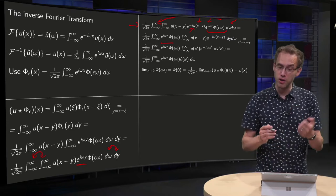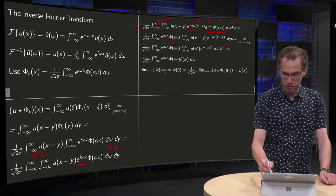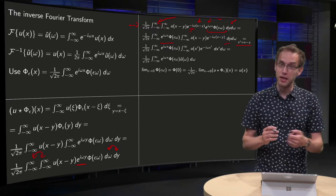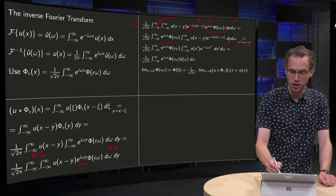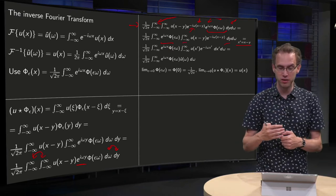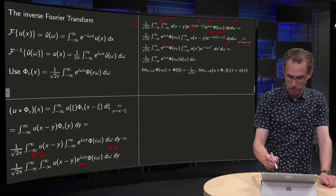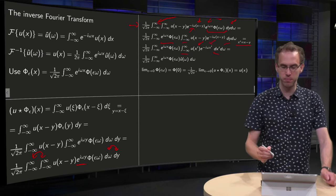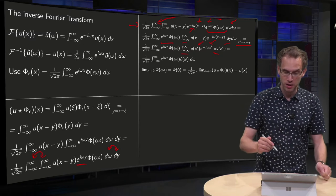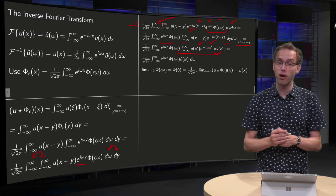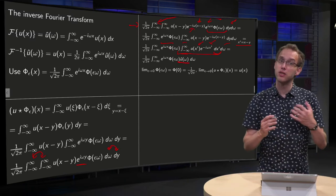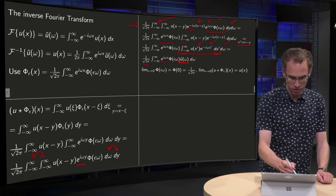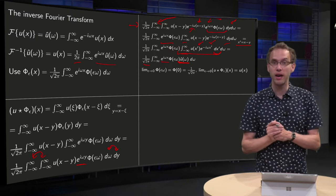What is left in the inner integral depends only on x − y, and we integrate with respect to y. We substitute x′ = x − y, so dy becomes −dx′, and the minus sign is cancelled by inverting the integration limits. We then see that the integral over x′ of u(x − y) e^(−iωx′) dx′ is exactly the Fourier transform of u, giving û(ω). So we have (1/√(2π)) · e^(iωx) · û(ω), along with the factor φ(εω) still present.